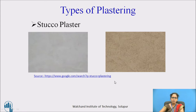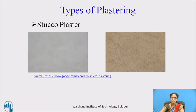Next, we have the stucco plaster. Stucco plaster is a type of decorative plaster which can be used for the exterior of buildings. It is applied in 3 coats for a fine finishing. The first coat is called the scratch coat, the second coat is called the finer or brown coat, and the third coat is the finish coat. The overall thickness including all coats will be 25 mm.